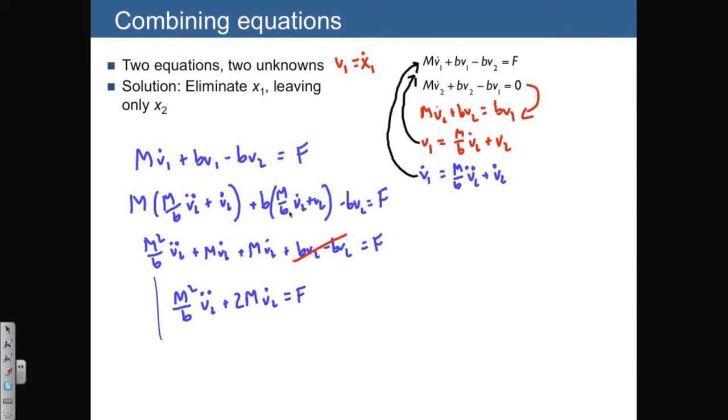So now we have an equation which allows us to relate the output v2 to the input f, and notice we've eliminated v1 or also x1. If you want to put this back in the form of x instead of v, we can just rewrite this equation as m squared over b...